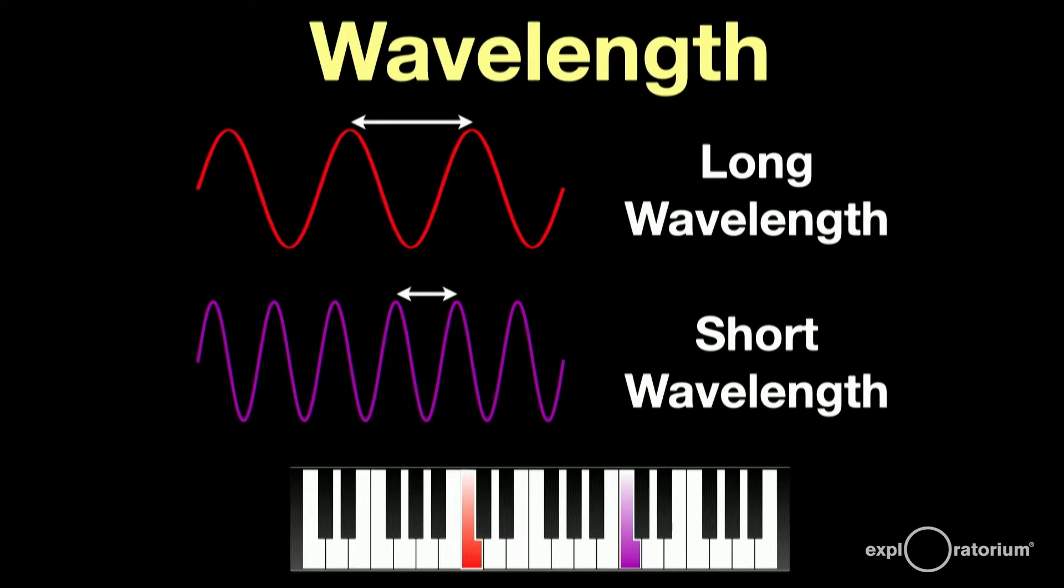As a matter of fact, red and violet light wavelengths and frequencies are about an octave apart. We can see an octave of light.